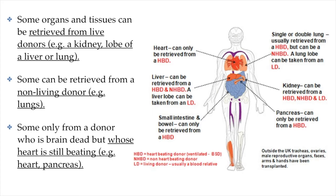That small lobe given to the recipient can eventually grow into a full liver. Oftentimes, when it comes to lungs with live donors, it is the lobe of a lung that can be given. Some organs require a non-living donor. Lungs do not require a heart-beating donor, but hearts, pancreas, and small intestines and bowel do require the donor's heart to still be beating when the organs are retrieved.